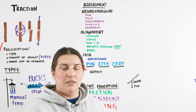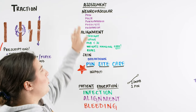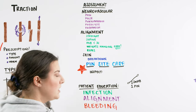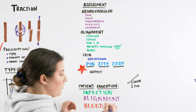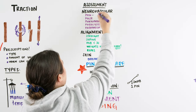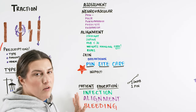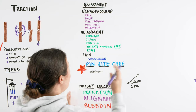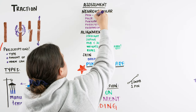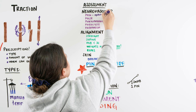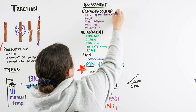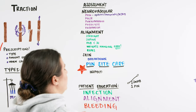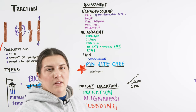When assessing neurovascular status, we hit on several key points: pain, warmth, pulse, and movement. Starting with pain — ask the patient what it feels like, where it is, whether it's new or has been ongoing since the injury. You can then treat pain with opiates, non-opiates, NSAIDs, or other medications depending on the patient. Pain should correlate with the injury; if it's outstanding or unexpected, note it and notify the healthcare provider.